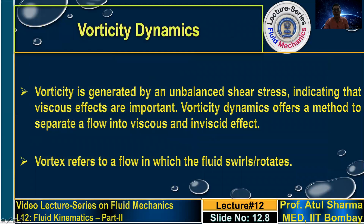Vorticity is generated by unbalanced shear force, indicating that viscous effects are important, since shear stress involves viscosity. Vorticity dynamics offers a method to separate a flow into viscous and inviscid regions. For flow across a flat plate, the region inside the boundary layer has rotational flow corresponding to the viscous region, while outside the boundary layer the fluid particle is only translating, not rotating — that is the inviscid flow region. A vortex refers to a flow region in which the fluid rotates, while vorticity is a variable representing pointwise distribution of rotation.